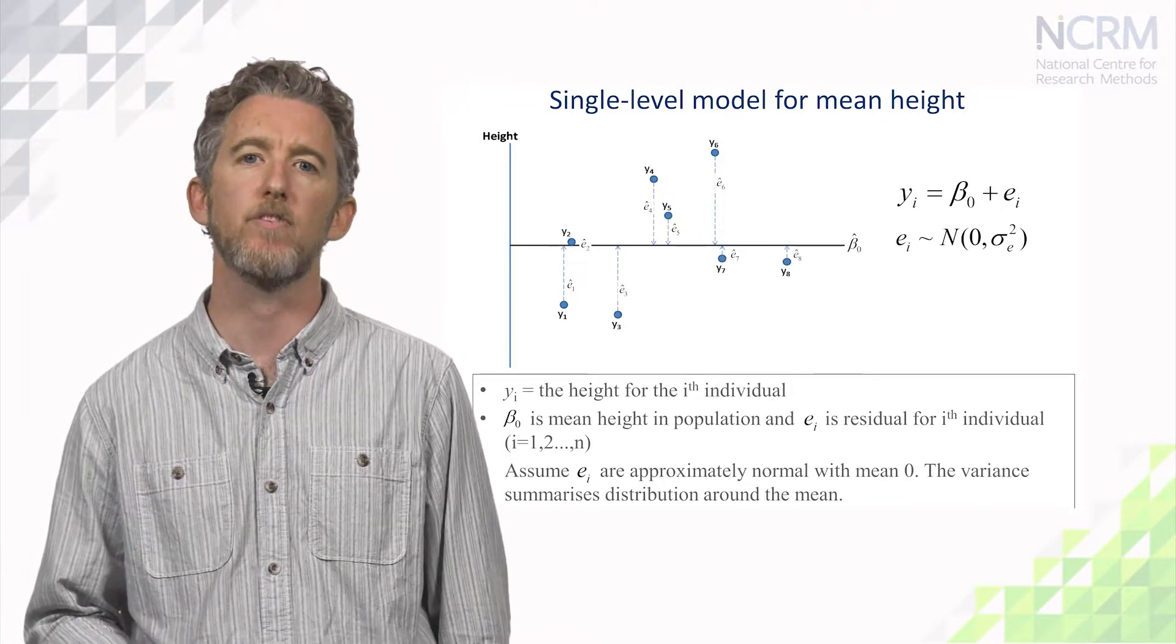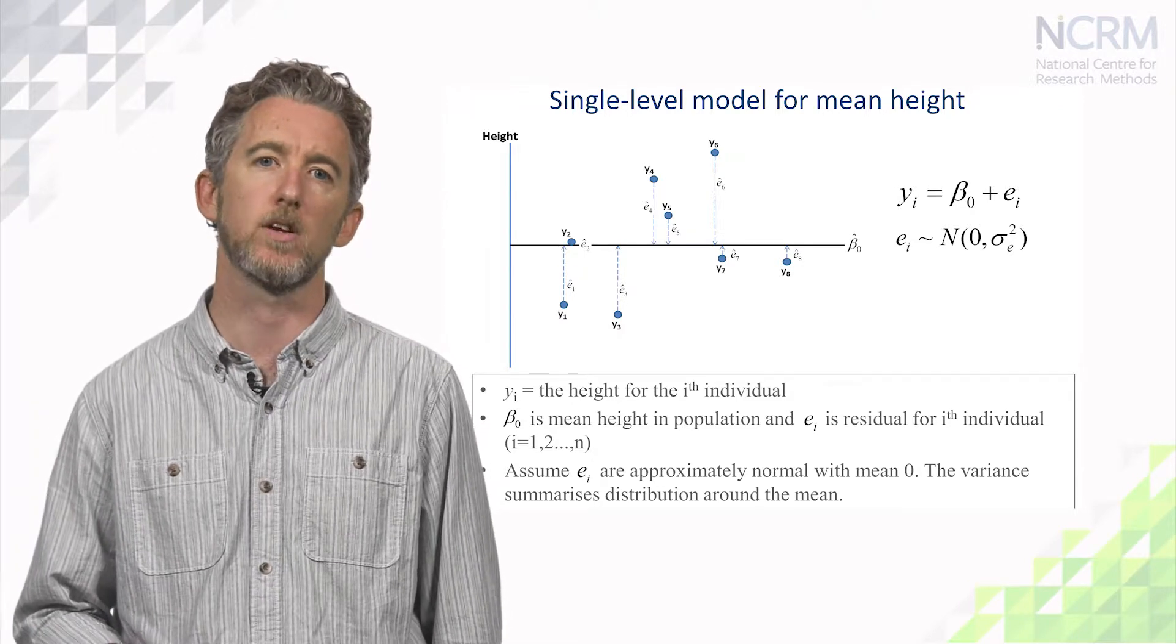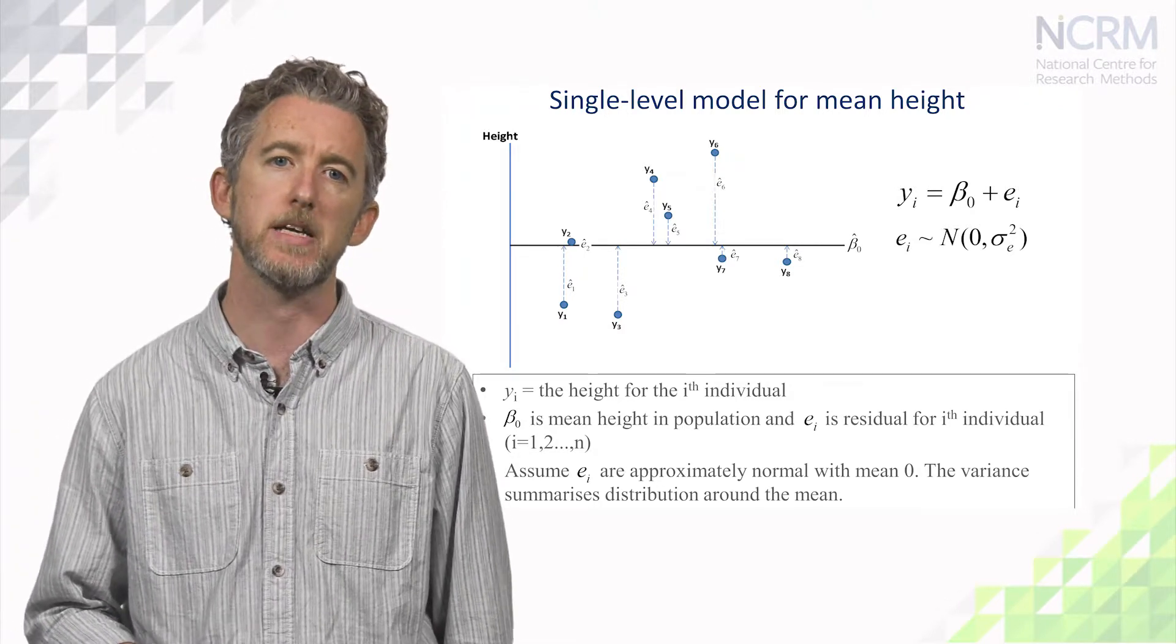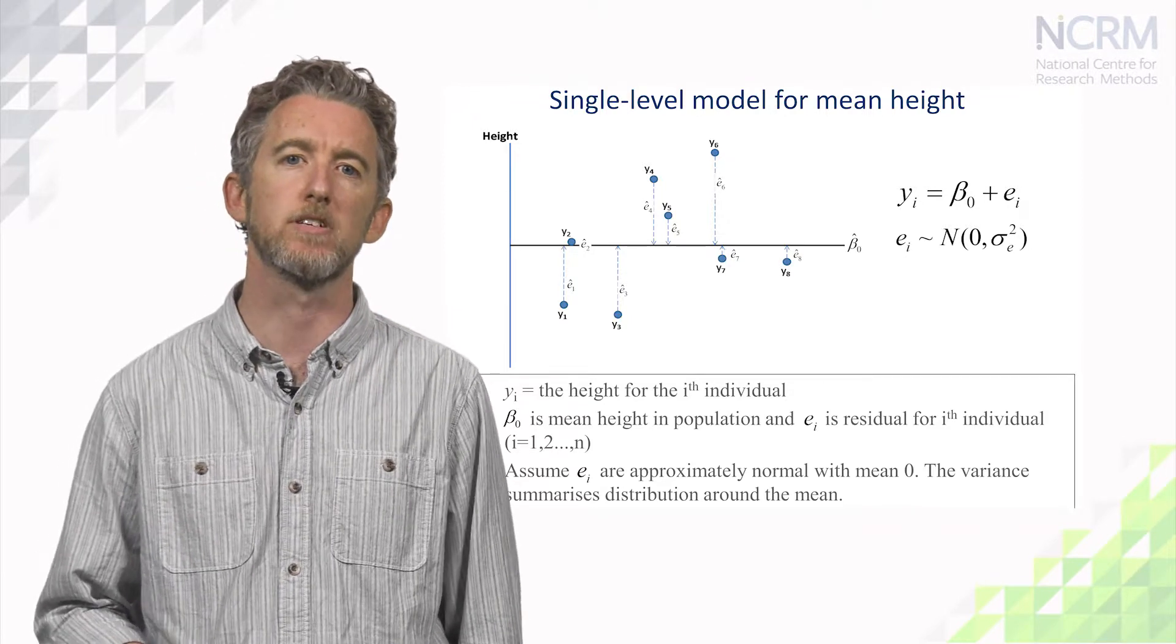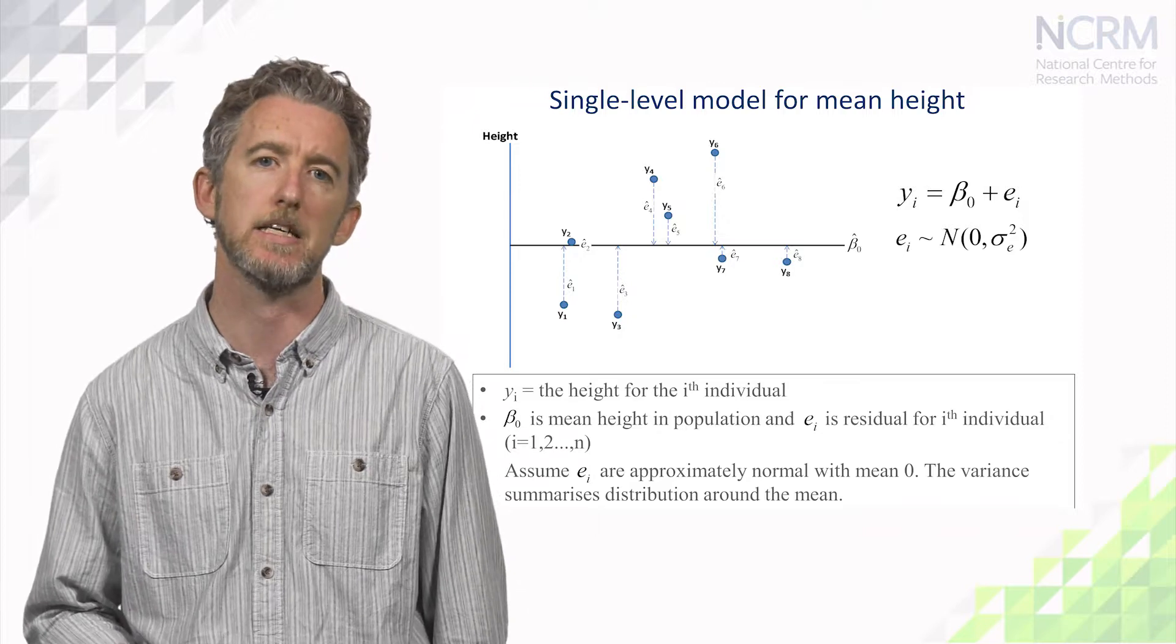So, the height for person 1, y₁, is equal to β₀ plus individual 1's residual difference from the mean, e₁. We then assume that the residuals are approximately normal with mean 0 and variance σ²ₑ.